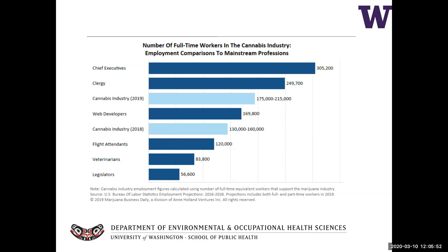While the legal cannabis industry is still in its nascent stages, growing cannabis is in fact nothing new. Widespread illegal cultivation has occurred throughout the United States over many years. However, very little formal research has been conducted regarding the hazards faced by cannabis farm workers. While some exposures may be unique to cannabis workers, many of these hazards are likely to be similar to those faced by other agricultural and horticultural workers. Thus, we can apply much of what we've learned from those related industries to protect cannabis workers.